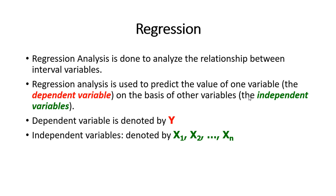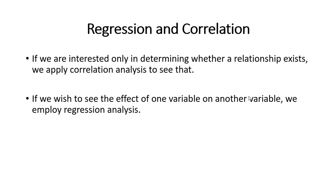The dependent variable is denoted by y, and the independent variable can be x1, x2 — you can use as many as possible. But in today's lecture we'll use simple linear regression, which requires only one independent and one dependent variable. Regression and correlation have a very close relationship: if we are only interested in determining whether a relationship exists, we apply correlation analysis. If we wish to see the effect of one variable on another, we employ regression analysis.